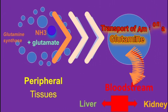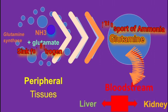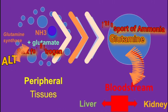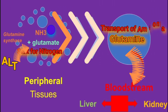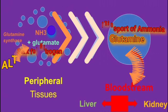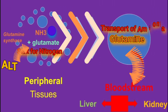Glutamate, on the other hand, serves as a sink for nitrogen during amino acid metabolism. An example of that is the ALT reaction, where alpha-ketoglutarate accepts the amine group from alanine to form glutamate.